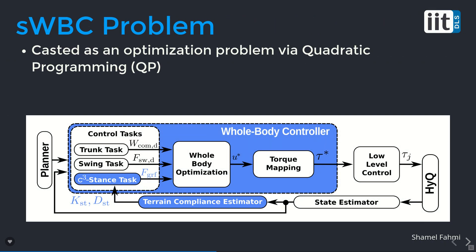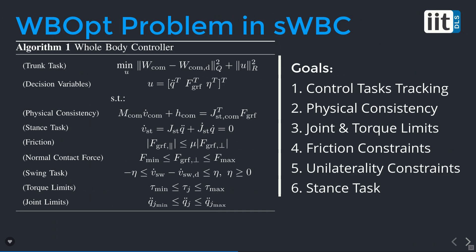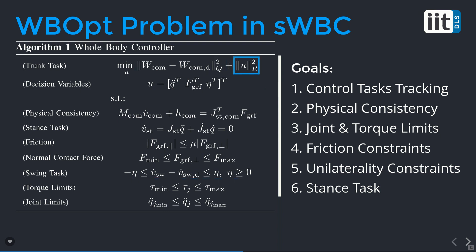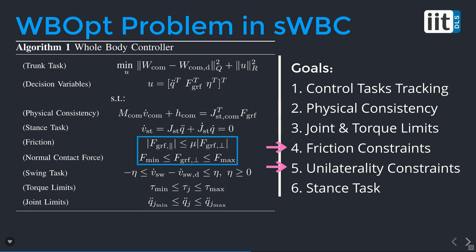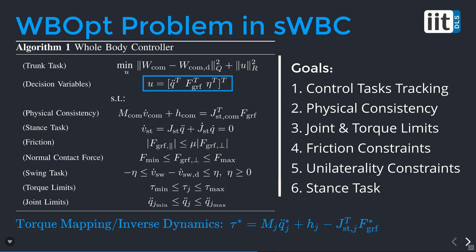We cast the objectives and constraints as an optimization problem via quadratic programming that solves for the optimal ground reaction forces and joint accelerations. Using inverse dynamics, we map these optimal variables to optimal joint torques. The control tasks are encoded as a cost function for the trunk task and as an inequality constraint for the swing task. We add an extra regularization and constraint softening term in the cost function. Physical consistency is added as an equality constraint, while joint and torque limits and friction constraints are inequality constraints. Finally, the stance task is added as an equality constraint, where we enforce that the feet remain stationary, and the optimal decision variables are mapped into joint torques using inverse dynamics.